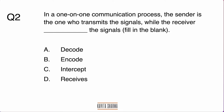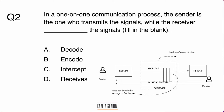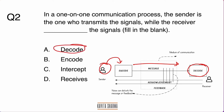To answer this you need to know the communication model. Looking at the model on screen: the sender encodes the message, sends it over some medium, and the receiver decodes the message. So the answer is that the receiver needs to decode the message. If you selected something else, you need to review the communication model.